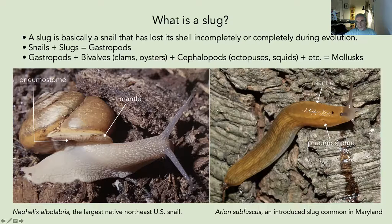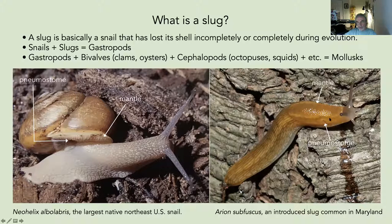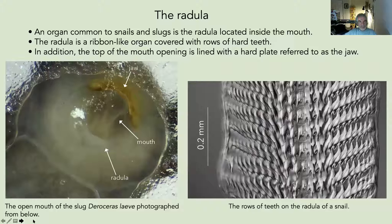In slugs, the mantle covers only a part of the anterior body, and there's the pneumostome — the lung is under the mantle. Most terrestrial snails have two pairs of tentacles: the upper tentacles are longer and have eyes at their tips, and there's a pair of much shorter lower tentacles, visible here in the photograph of the slug.